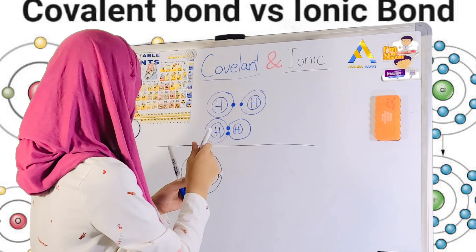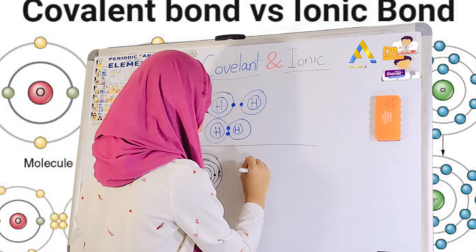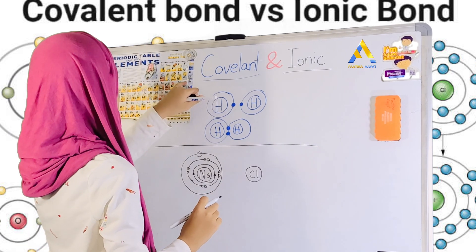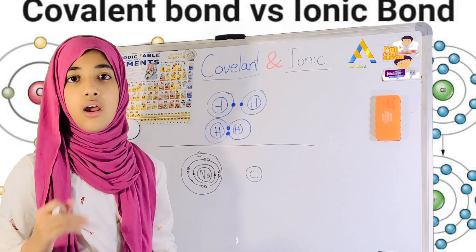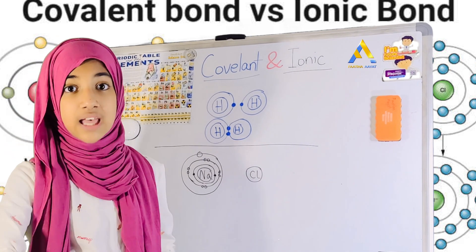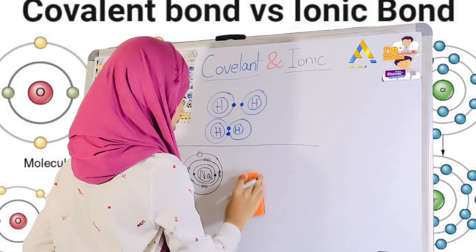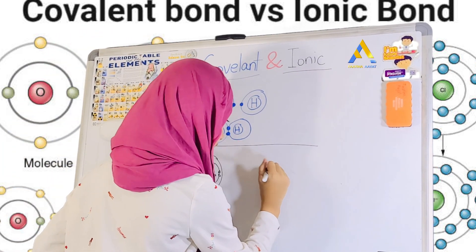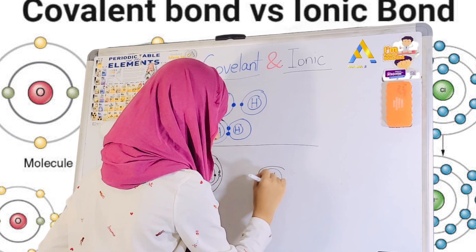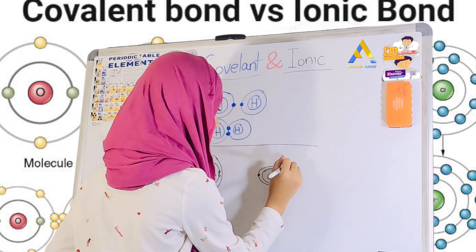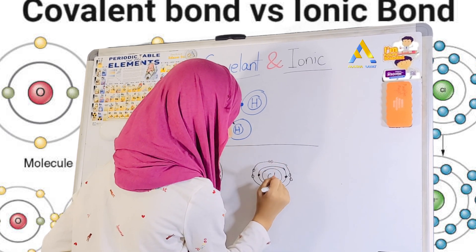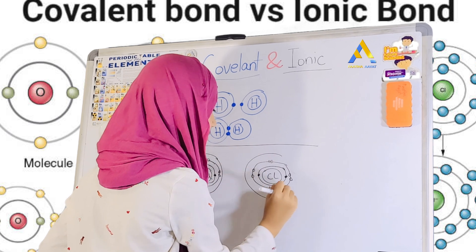Now it comes near and meets chlorine. Chlorine has 17 protons — the atomic number is 17 — so we're also going to have 17 electrons. On the first ring, there are two. On the second ring, there are eight. And then on the outermost ring, there are seven electrons.